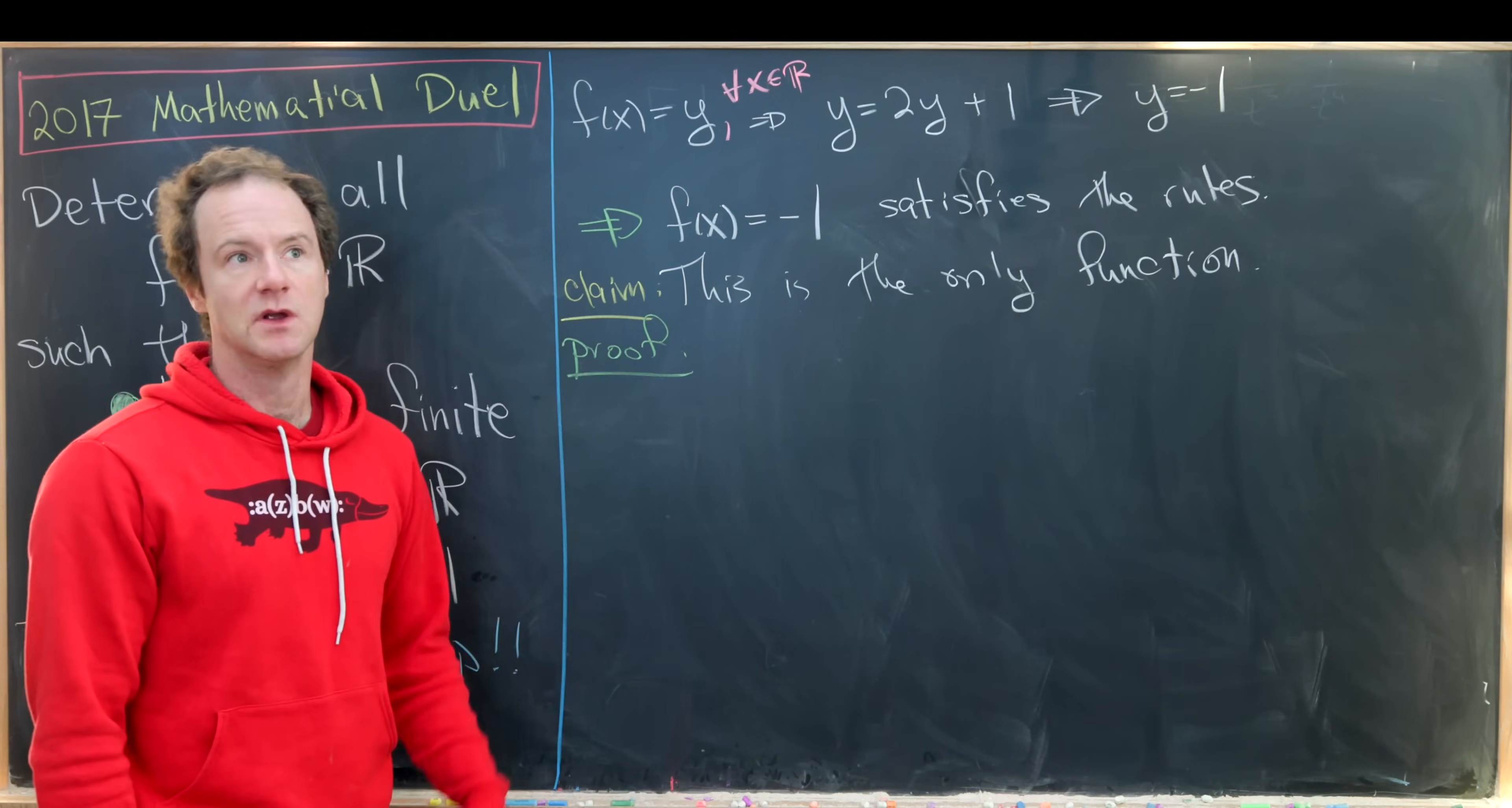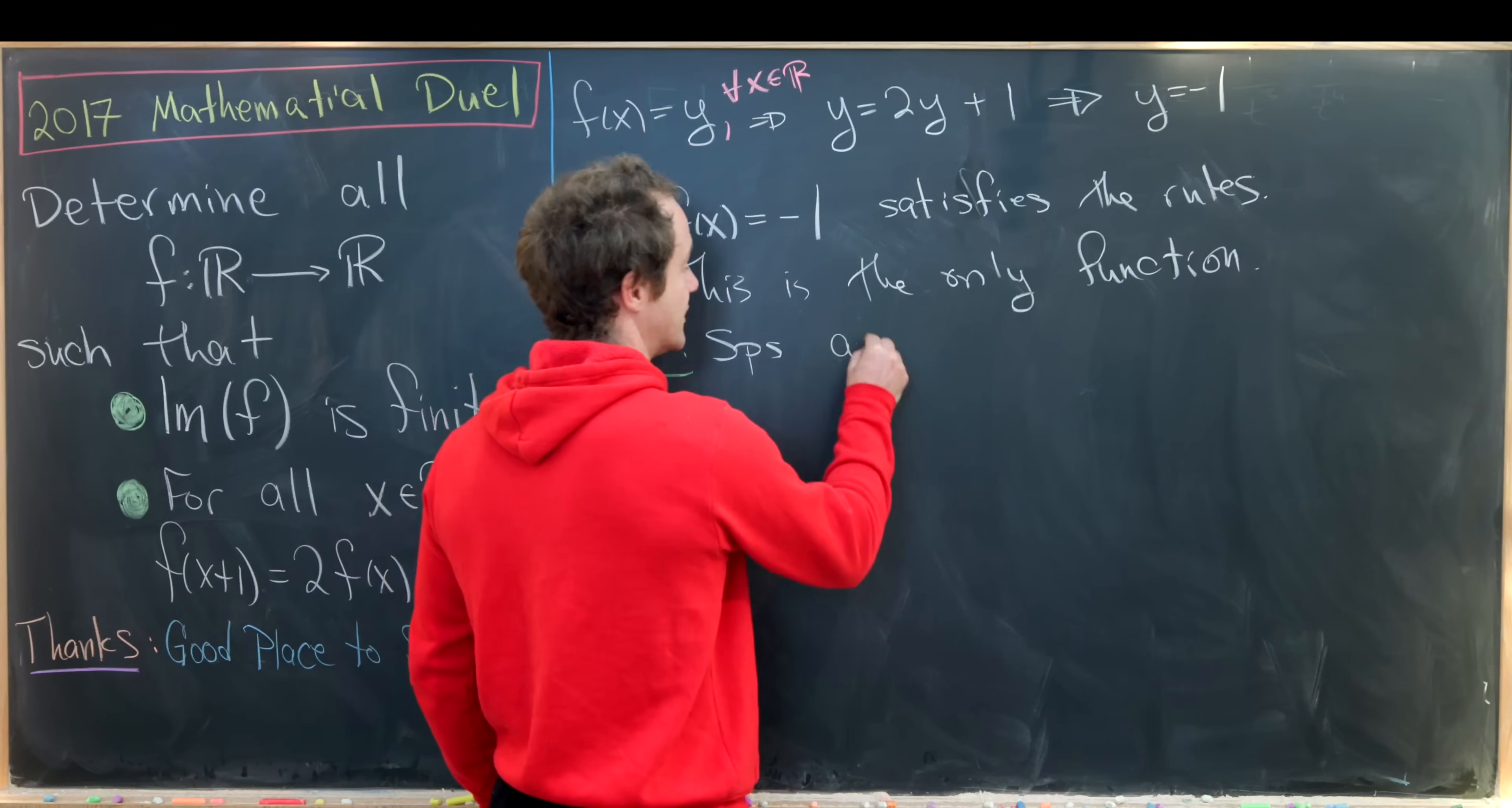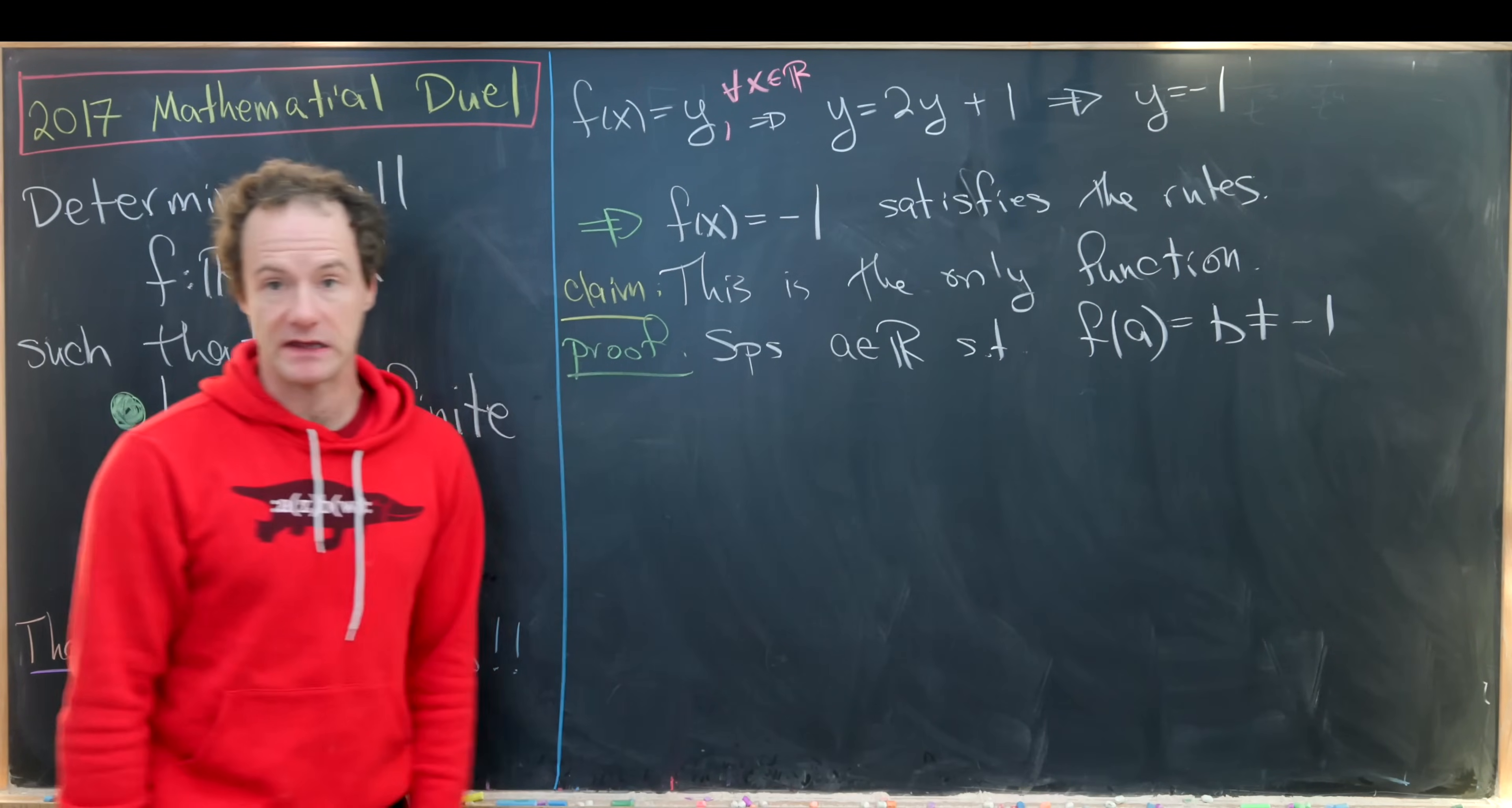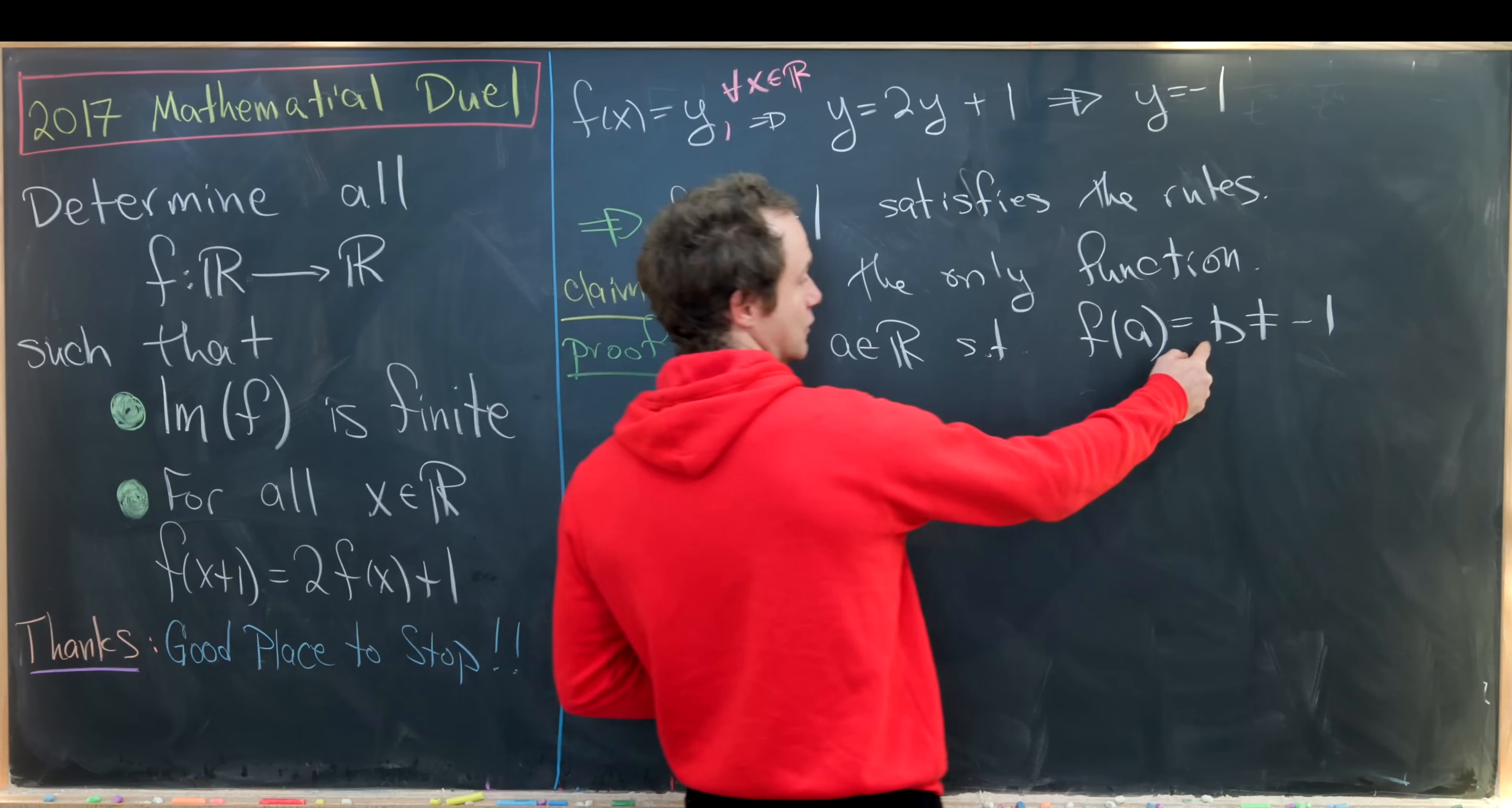this rule, but then we'll show that something goes wrong. But that's equivalent to saying that we have a real number a such that f(a) is not equal to negative 1. So I'll set that equal to b. So any function which is not identically equal to minus 1 takes on a value which is not equal